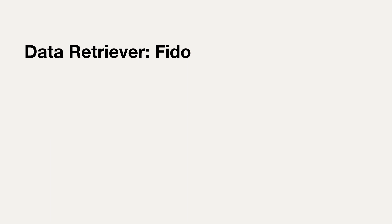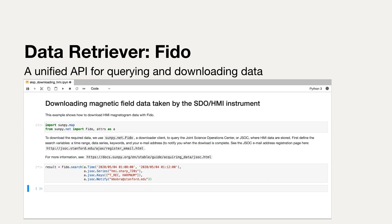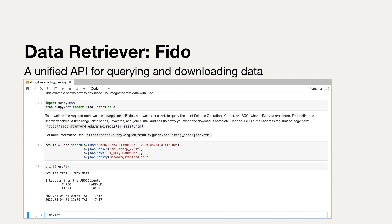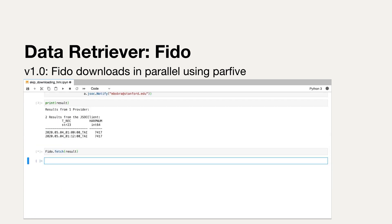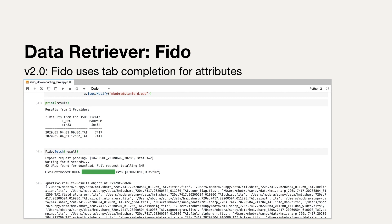The SunPy data retriever, FIDO, provides a unified API for querying and downloading data from all these different space-based and ground-based observatories. So now, if you're looking for data on a particular date, or looking for data that matches a particular target or wavelength, you can query roughly 90% of all the solar data that's out there and download whatever matches your search criteria. Here is an example — using FIDO to search and retrieve magnetic field data on a particular date. In version 1.0, we improved FIDO to download data in parallel using the PAR5 package. And in 2.0, FIDO now uses tab completion for any attribute you might want to search against.